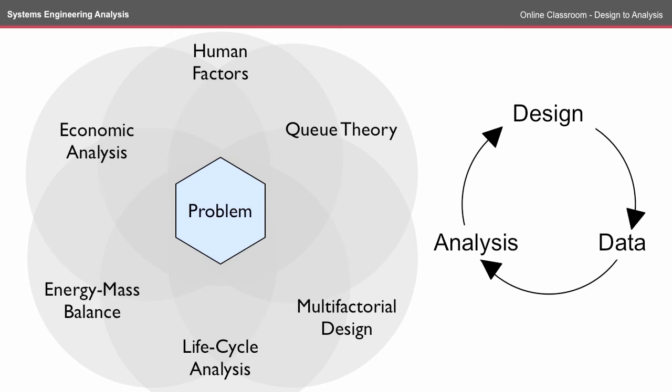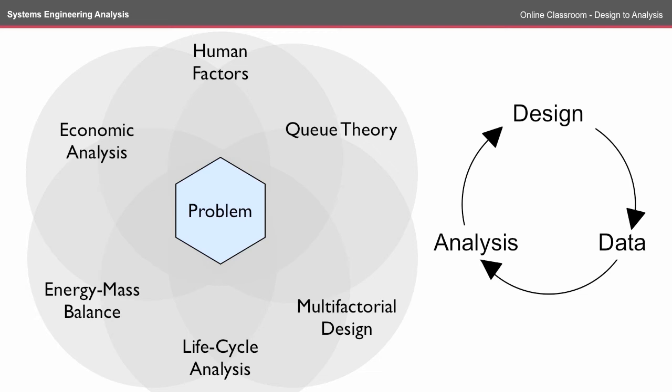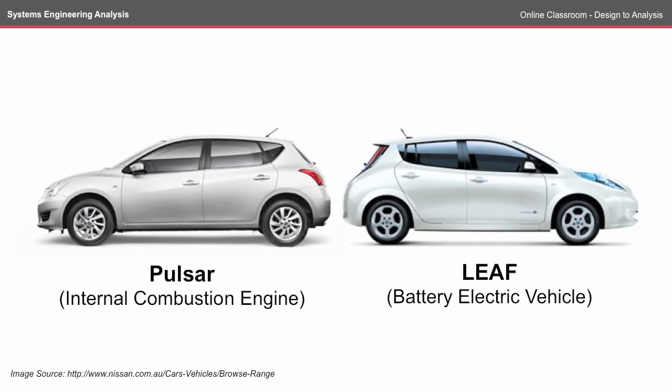You might look at the conceptual level or the detailed level. The online classrooms are largely at the conceptual level to make sure that you're on the right track. In the analysis we're going to cover in these online classroom series, we're going to compare an internal combustion engine car to a very similar electric vehicle option. Here I've got the Nissan Pulsar and the Nissan Leaf, and throughout the online classroom I'll refer to these vehicles for a point of comparison.